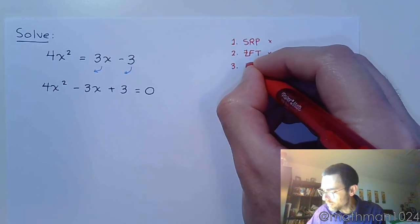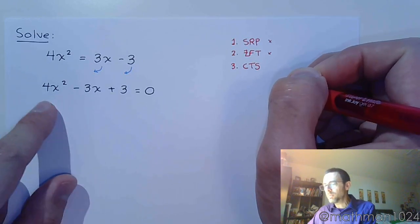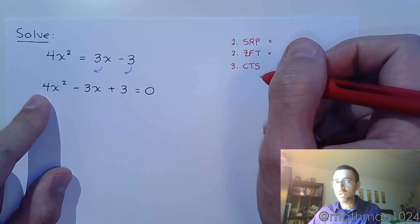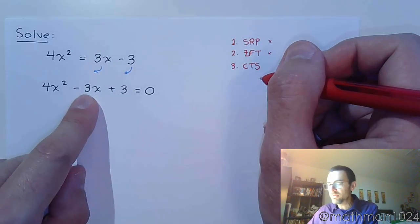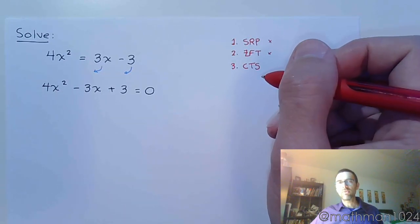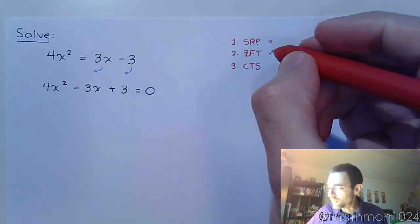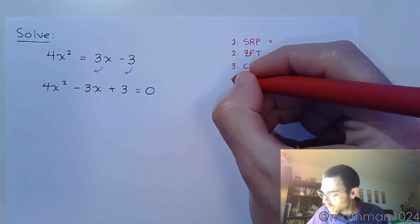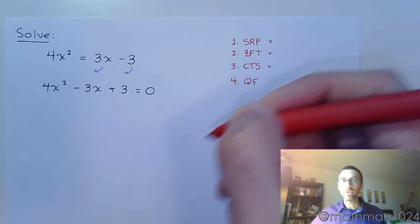The third method we try is completing the square. To complete the square, you want this guy to be a positive 1. It's 4, so we can divide everything by 4, which makes that a 1. But if I divide these two guys by 4, now I'm going to have fractions. So if in the process of trying to complete the square you come up with fractions, completing the square is probably not going to be the easiest thing for you. In that case, you move on to the method of last resort, which is the quadratic formula.